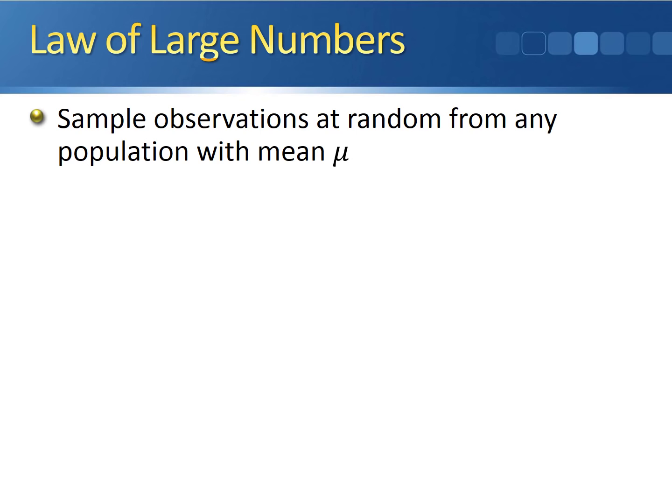Let's say we sample observations at random from any population with mean mu. This population doesn't have to be normally distributed — it can follow a uniform distribution, a Poisson distribution, an exponential distribution — any population with mean mu. Once we have all of our data, we can calculate the sample mean x-bar, and then apply the law of large numbers.